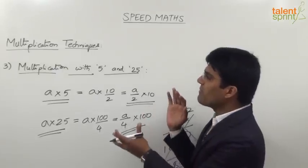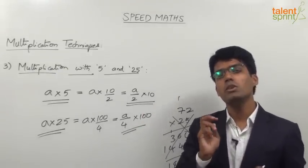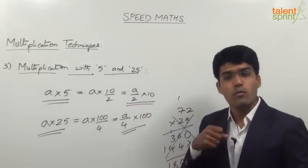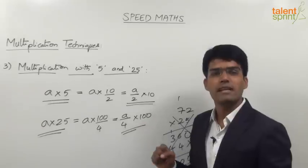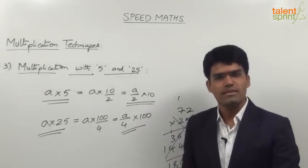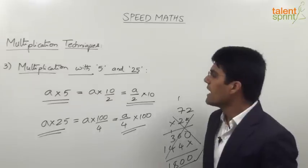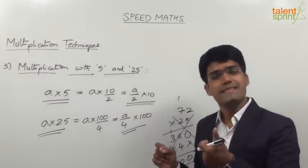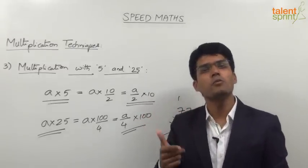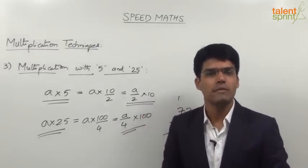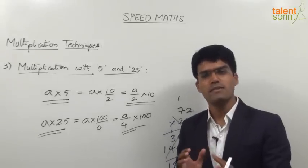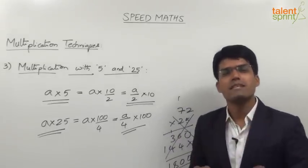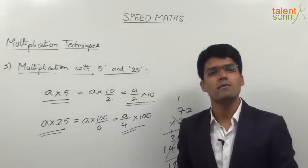So far in multiplication with 5 and 25, we have taken only numbers exactly divisible by 2 or exactly divisible by 4. But what do we do when the number is not perfectly divisible by 4 or by 2? Let us take a few examples. Say we have to multiply 65 with 5: half of 65 is 32.5, and 32.5 into 10 is 325. The concept remains the same; it becomes a little more involved because of a decimal, but with practice even that becomes simple.